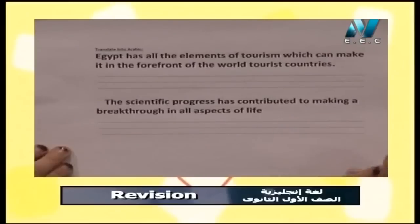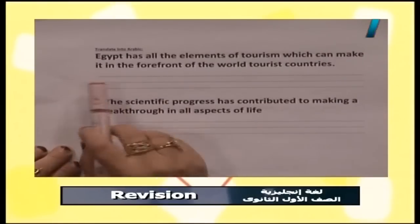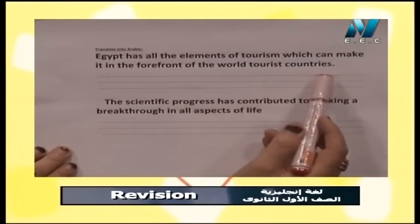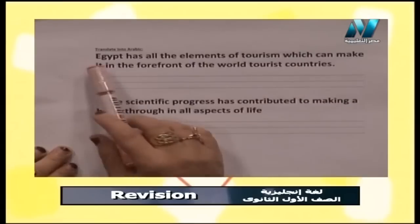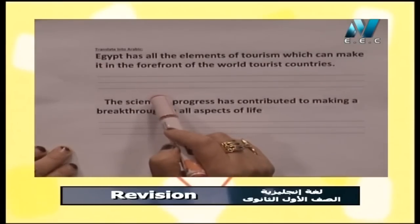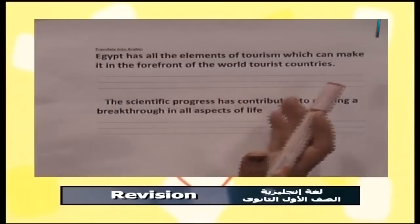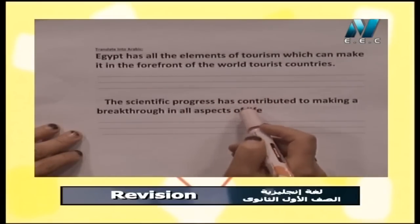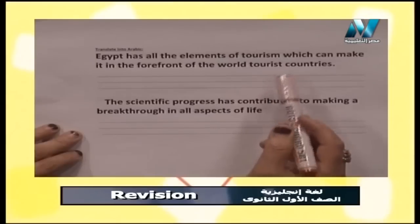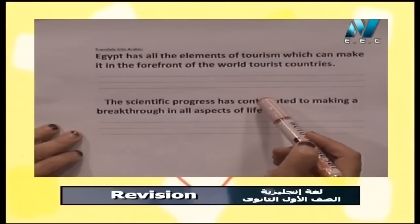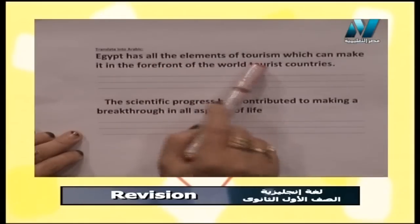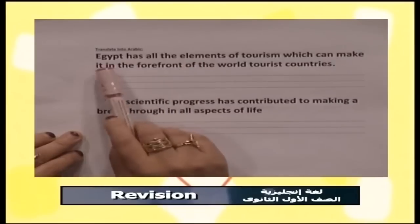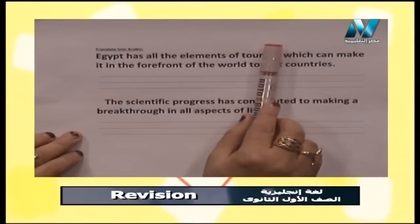Here we have the first kind of translation: translate into Arabic. Number one: 'Egypt has all the elements of tourism which can make it in the forefront of the worldly tourist countries.' عشان اترجم لازم اقرأ كل الجملة من أول حرف لحد الفل ستوب عشان اعرف المعنى العام. الترجمة مش زي ميزان كلمة بكلمة، لا، بندي المعنى العام. كلمة elements - كلنا عارفينها - تعني عناصر.